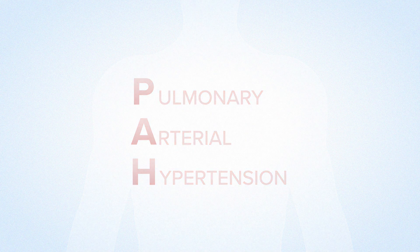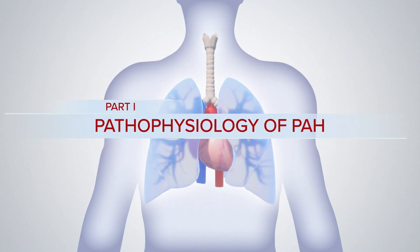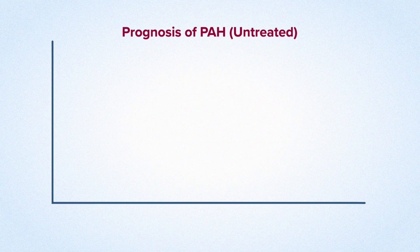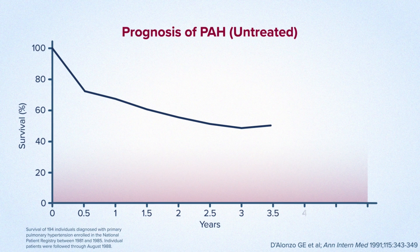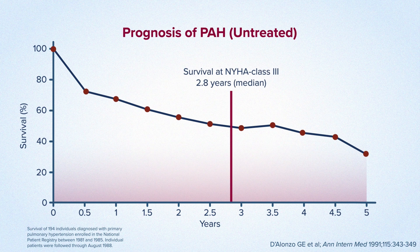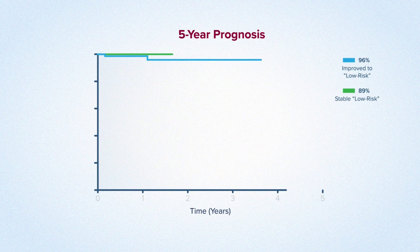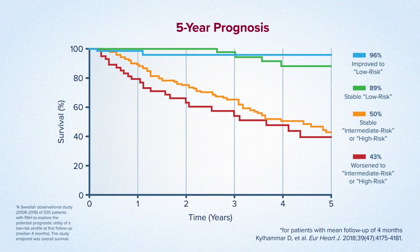While the etiology of PAH is not fully understood, the pathophysiology of the disease is well established. The rate of progression can be rapid and unpredictable, underscoring the urgency to diagnose and treat quickly. In the absence of targeted drug treatment, median survival was shown to be less than 2.8 years. Because of the poor prognosis, treatment guidelines emphasize achieving low-risk status as a key treatment goal.